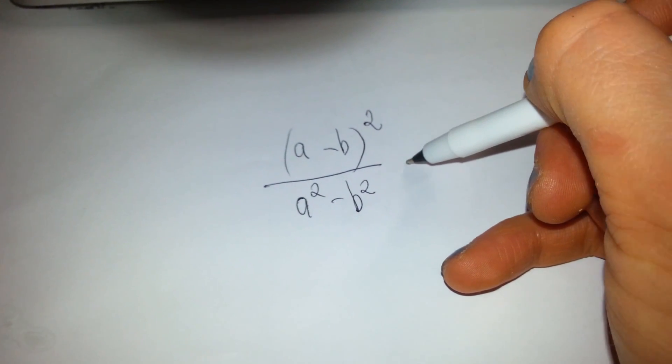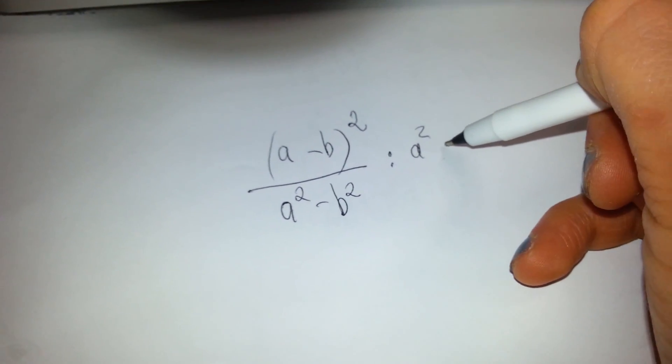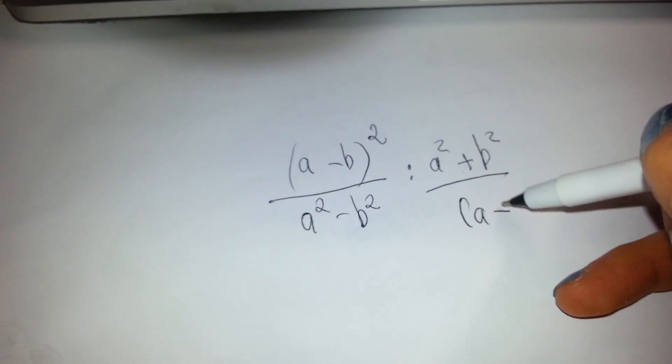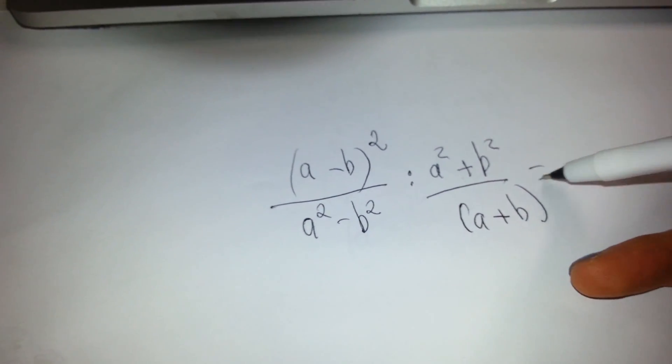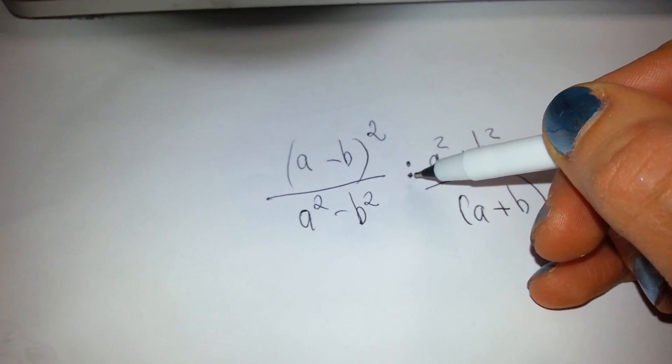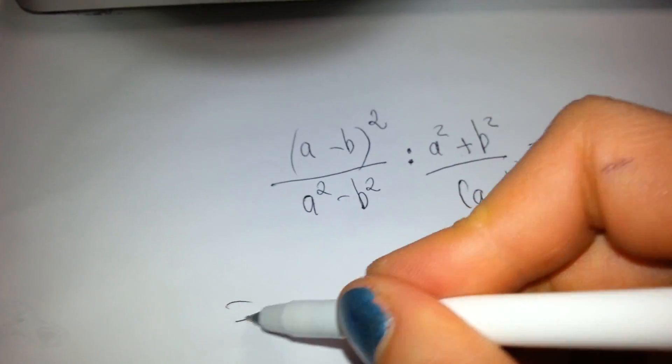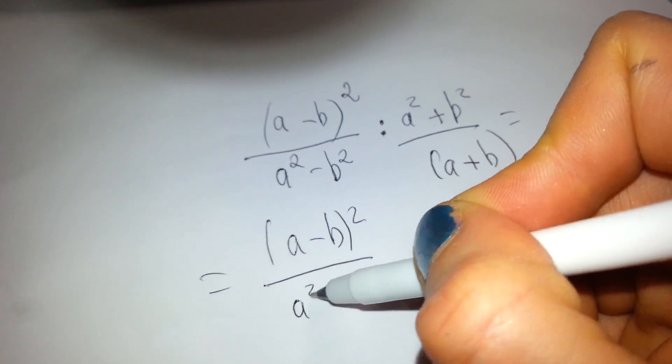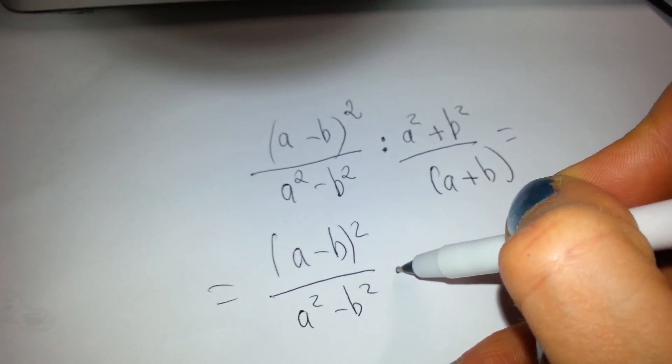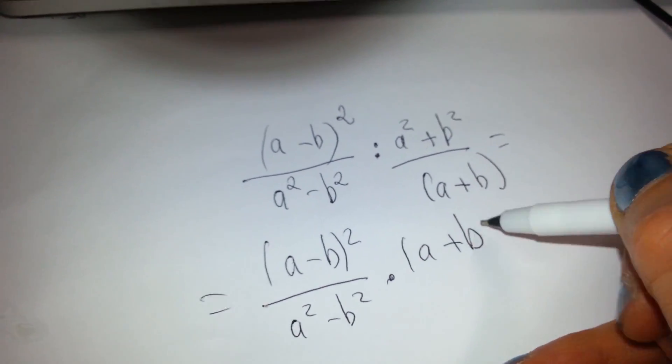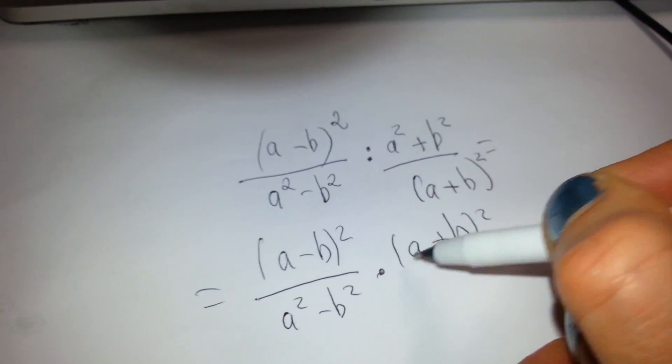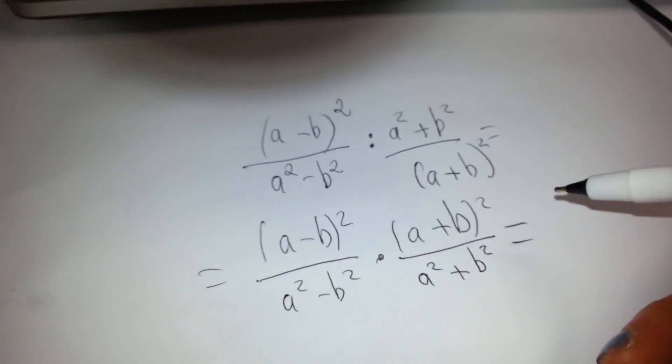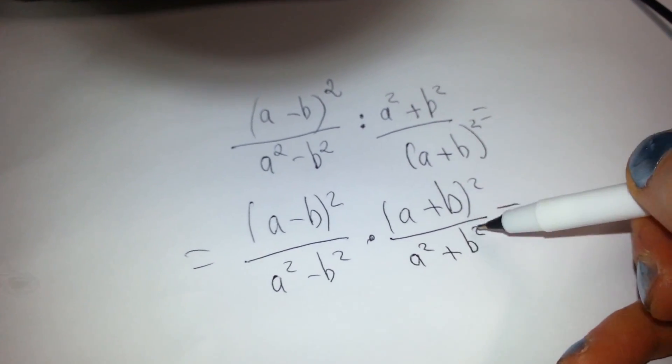And as you can see, this is division. So we're going to switch this to multiplication by flipping this around. Let's rewrite. Make sure you don't skip steps. It's better to go slower than to make mistakes. So we flipped this around.